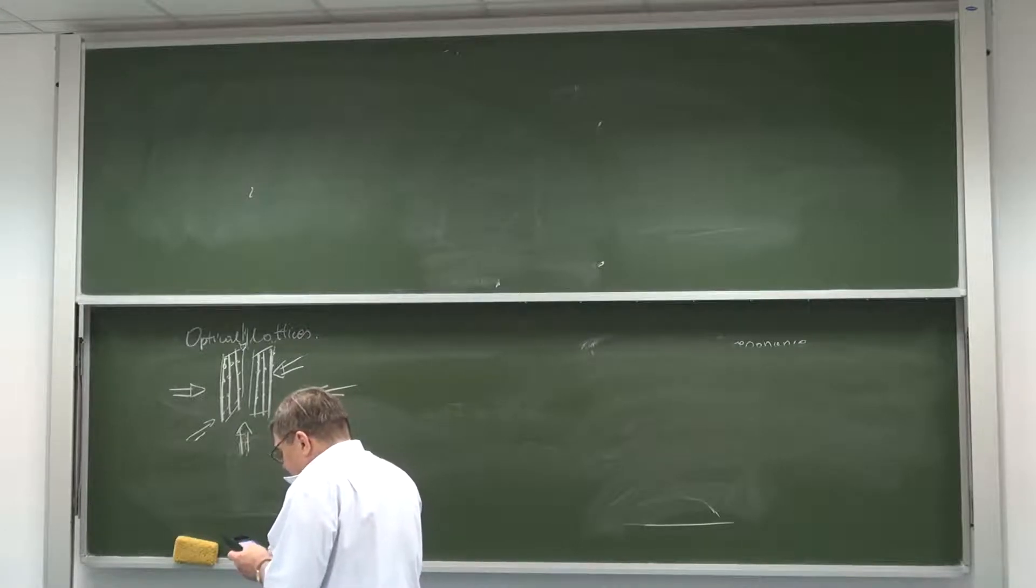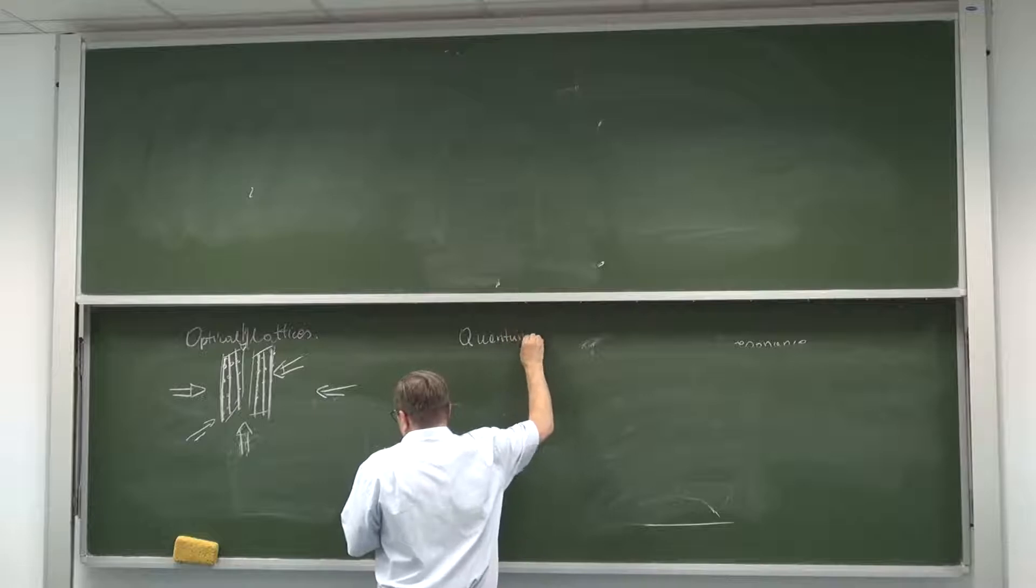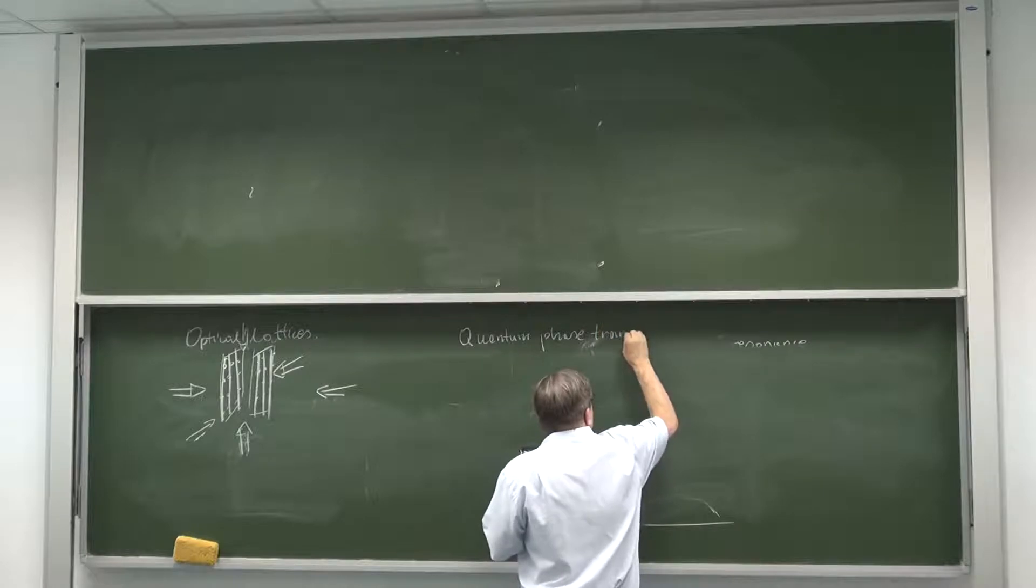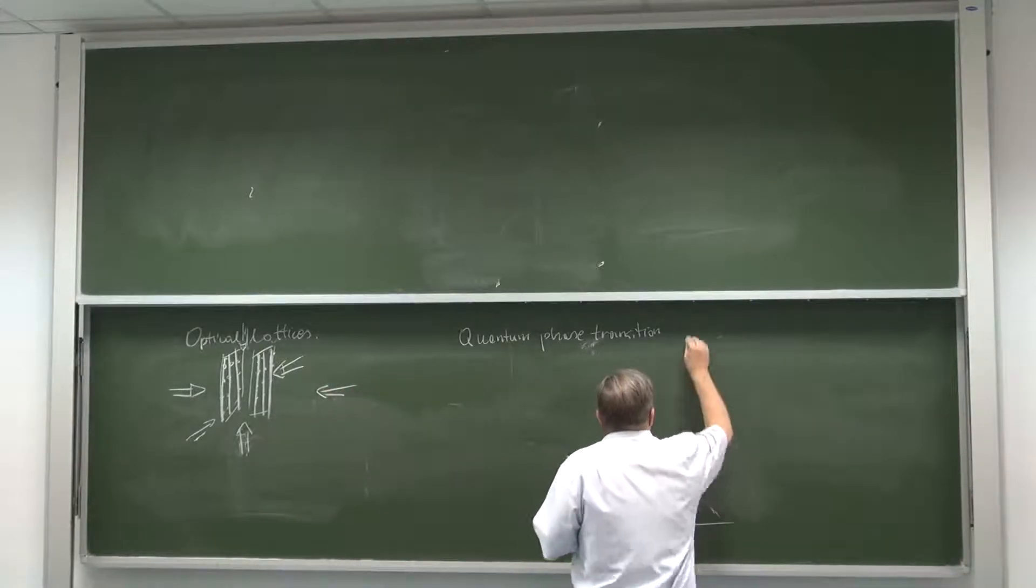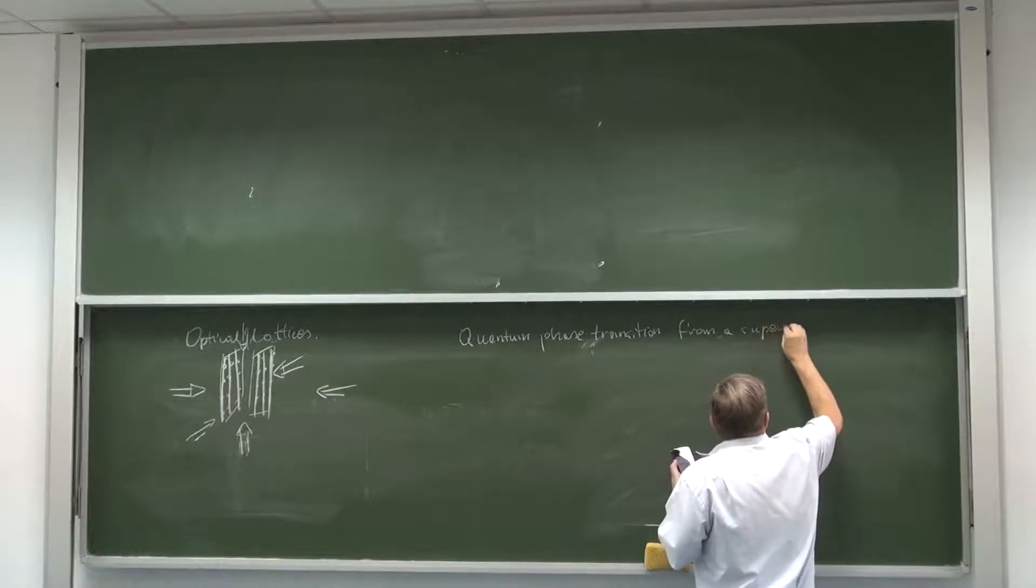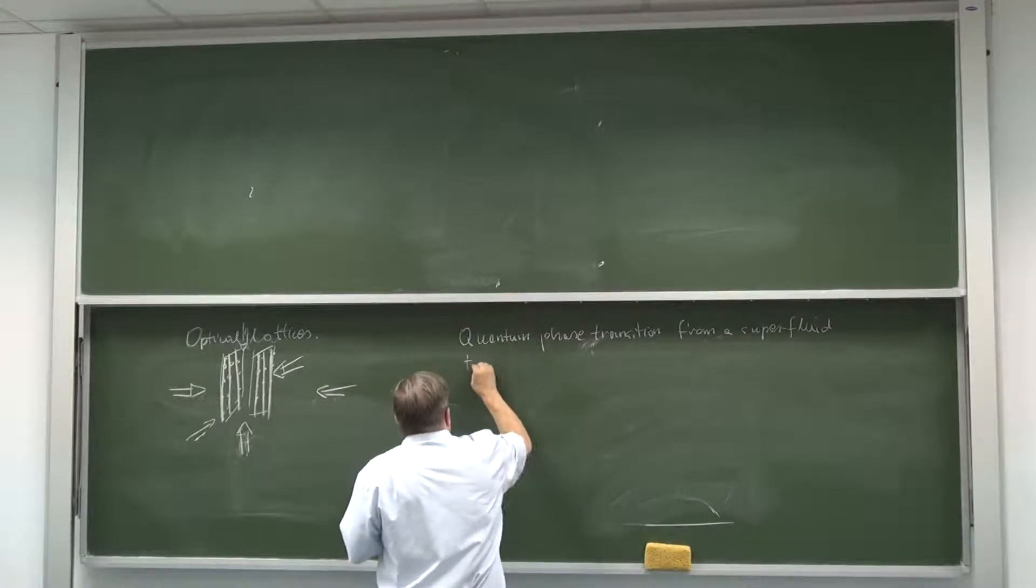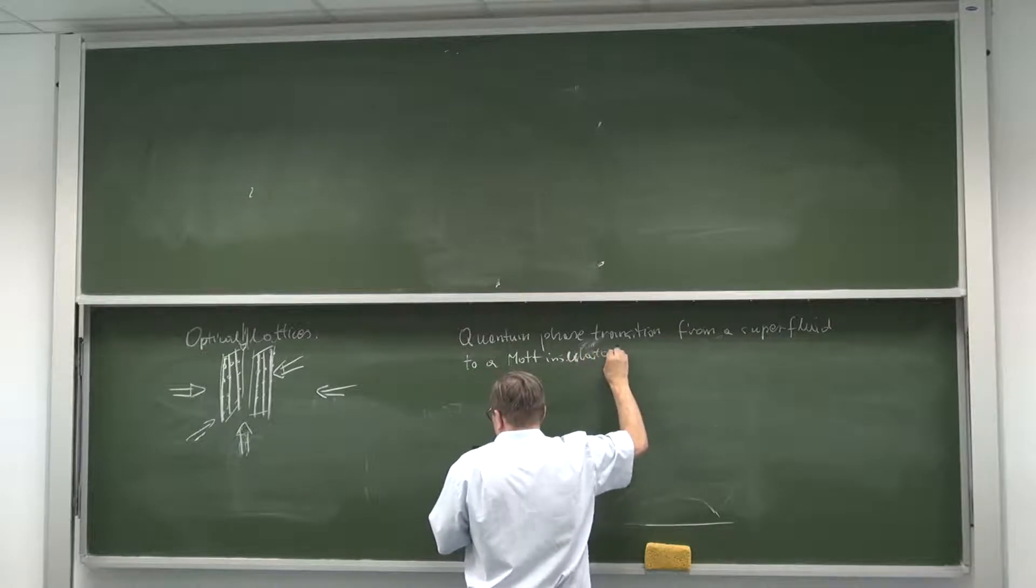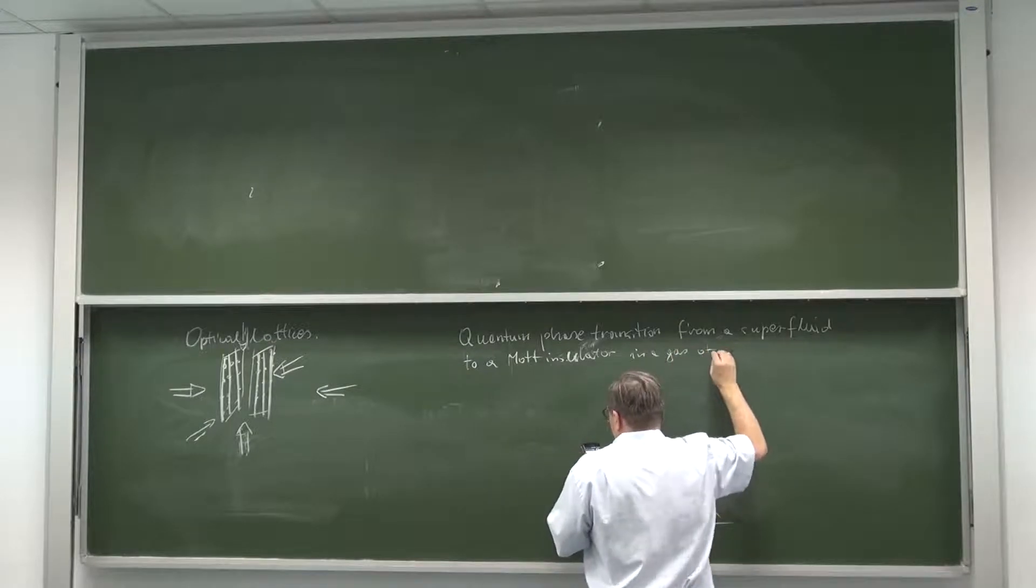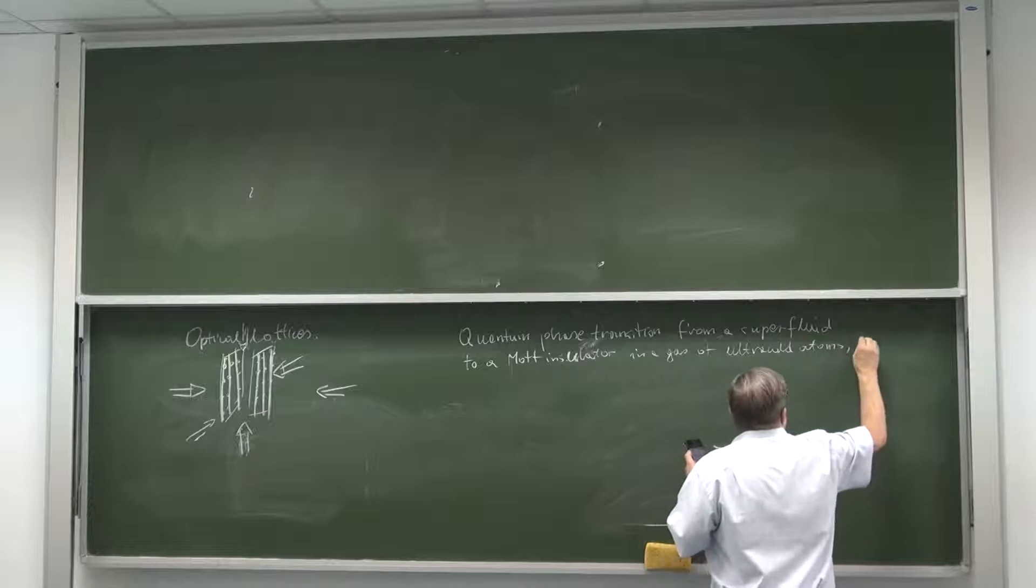I think a PhD student in the group of Professor Theodor Hänsch in Garching near Munich. It was observation of Mott Insulator Superfluid Transition. I want to give you the real title. Quantum Phase Transition from a Superfluid to a Mott Insulator in a Gas of Ultracold Atoms. It was Nature 2002.